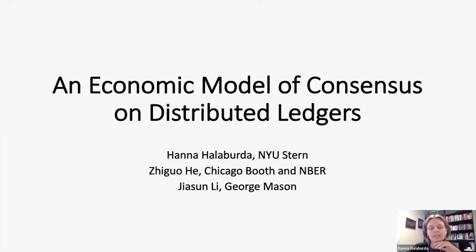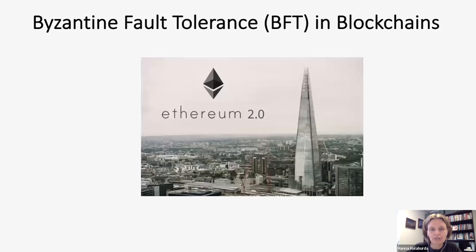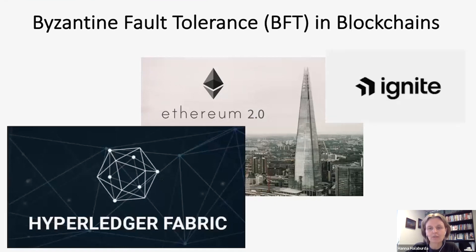This research was inspired by the observation that many modern blockchains — those after proof-of-work and Nakamoto's initial blockchains — are using Byzantine fault tolerance as the backbone of their consensus protocol. This is true for Ethereum 2.0, Hyperledger Fabric, Tendermint (recently rebranded to Ignite), and many more.